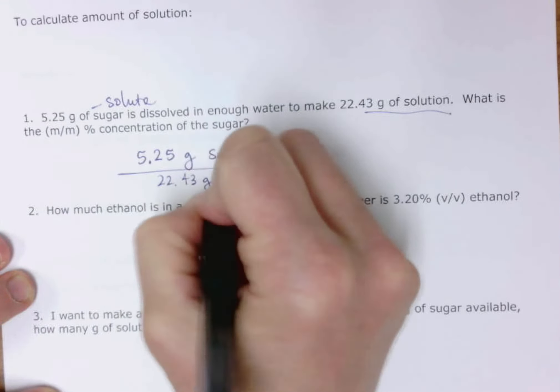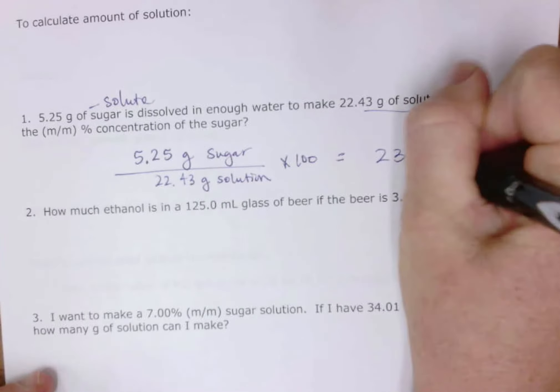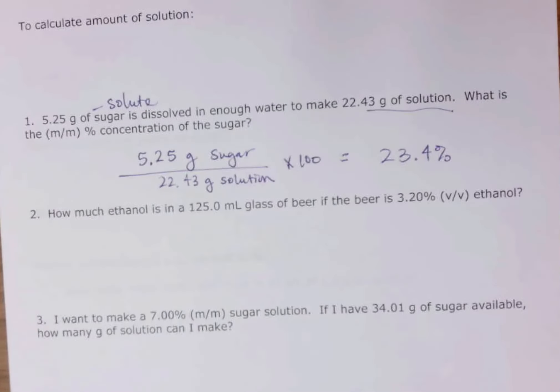So 5.25 divided by 22.43 times 100 gives us 23.4%. If it drives you crazy not to have units, you can write m/m. That's how you calculate percent concentration.